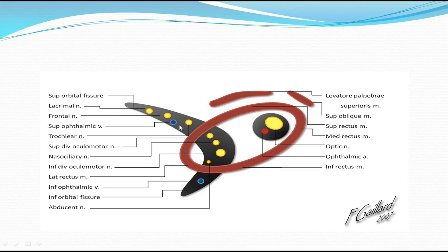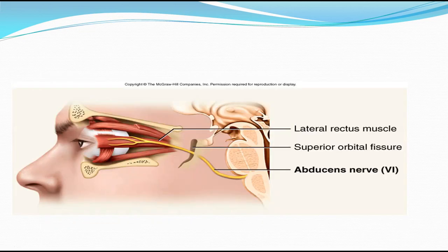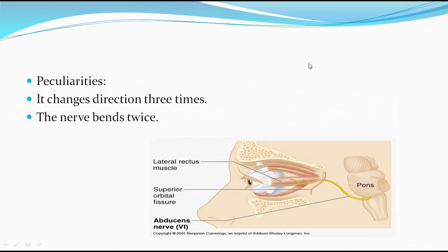At the superior orbital fissure, it is divided into compartments by the common tendinous ring of Zinn, from which superior rectus, inferior rectus, lateral rectus, and medial rectus originate. The abducent nerve passes through the superior orbital fissure in the intermediate compartment on a more lateral aspect - logically, because it has to supply the lateral rectus.